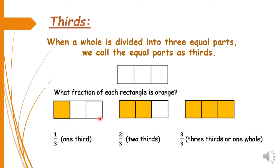If two parts of the rectangle are shaded orange, we write the fraction as 2/3, where 2 represents the two shaded parts and 3 represents the three equal parts the figure is divided into — we say it as 'two thirds.' If all three parts are shaded, we write 3/3, where the top 3 shows the shaded parts and the bottom 3 shows the total parts — we read it as 'three thirds,' or since all parts are used, we can also say 'one whole.'